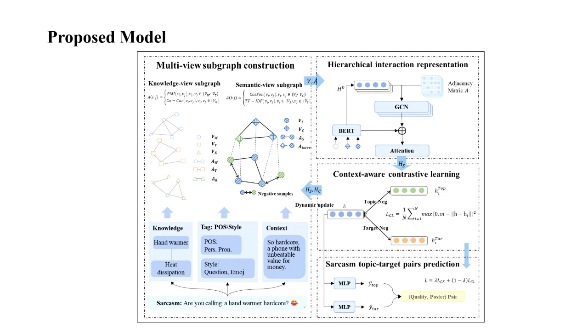Specifically, a heterogeneous information network, which includes static and dynamic subgraphs, is firstly constructed by integrating multi-view features such as the sarcastic style, domain knowledge, and the semantics.